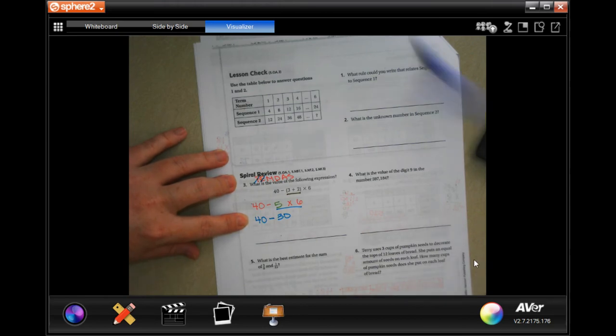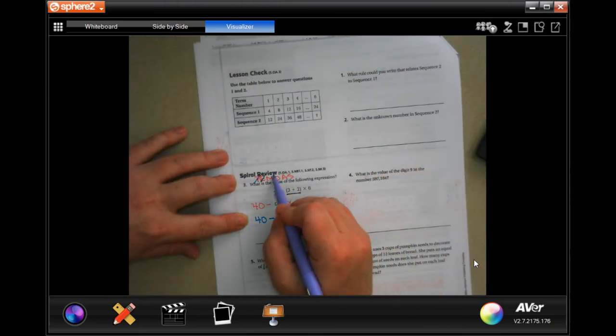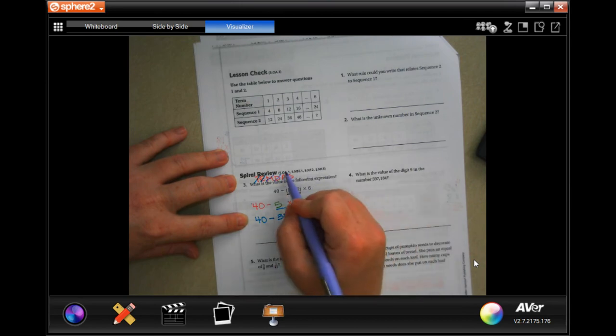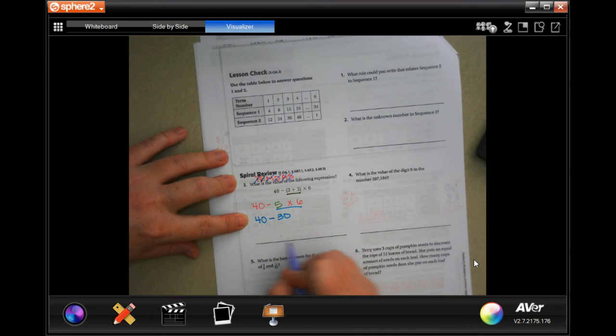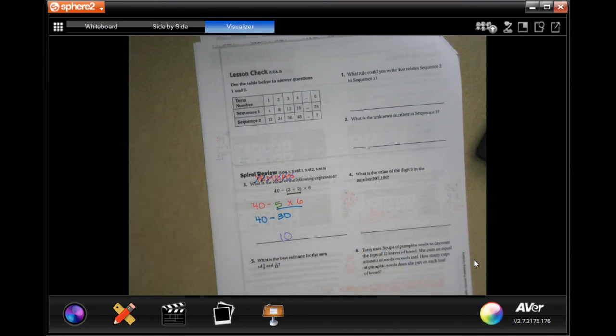Now parentheses are done. I don't have any exponents. I do have multiplication, so I'm going to rewrite my 40 minus, and then five times six is 30. Now I just have my subtraction, so 40 minus 30 is 10.